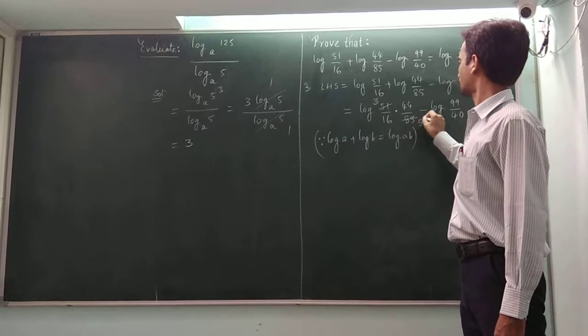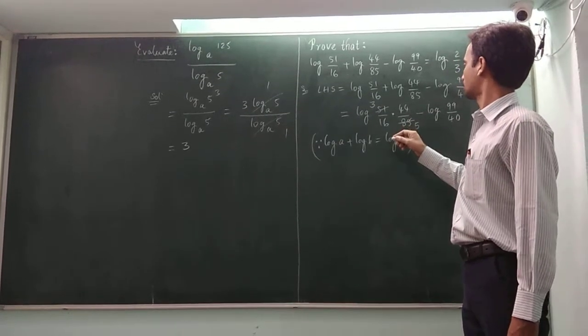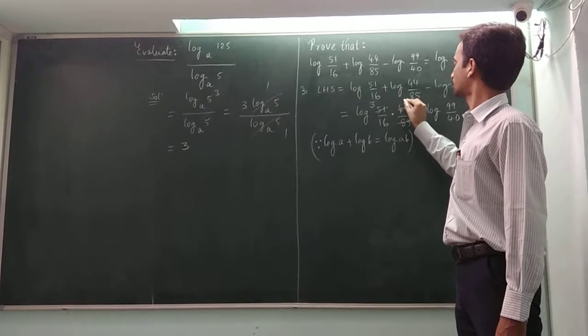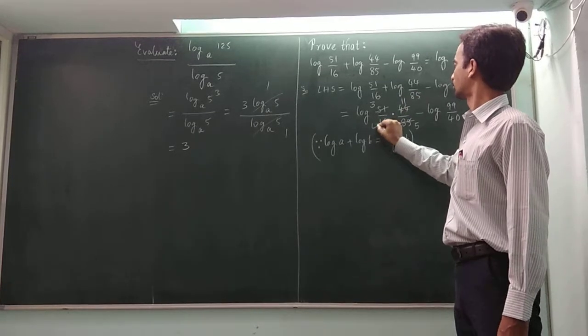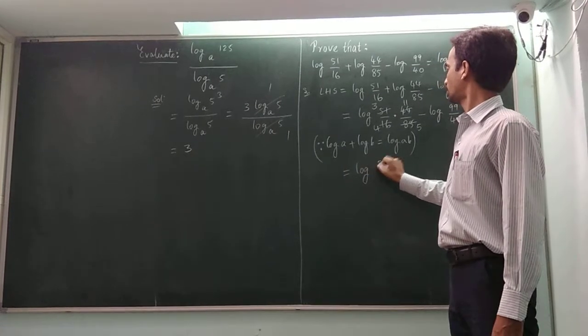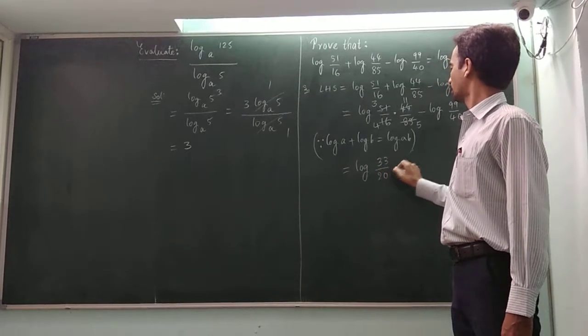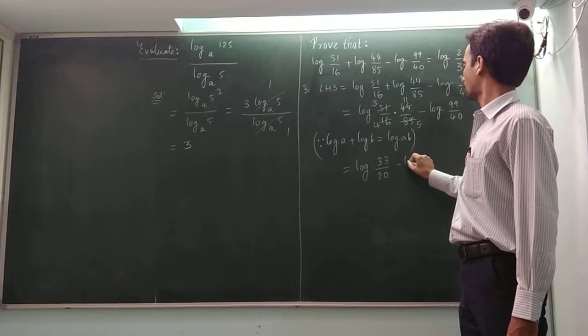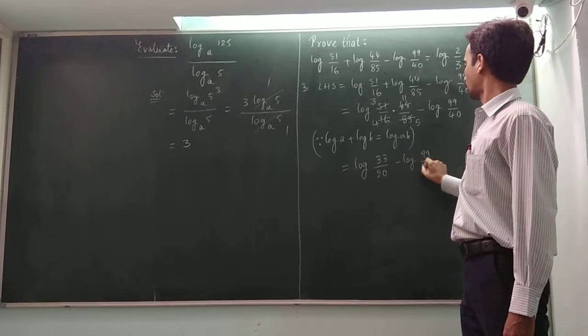17 times 5 is 85. And we are canceling this for 11, so we can get it as log 33 by 20 minus log 99 by 40.